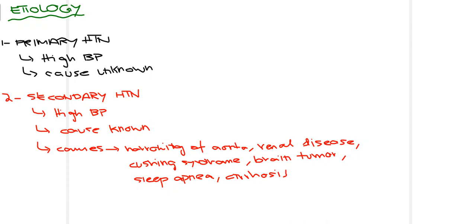The key difference between primary and secondary hypertension is that both have high blood pressure, but in primary the cause is unknown while in secondary the cause is known. Common causes of secondary hypertension include renal diseases such as renal artery stenosis, Cushing's syndrome, brain tumors pressing against arteries, sleep apnea, and cirrhosis — since the liver also plays an important role in controlling blood pressure.